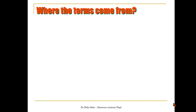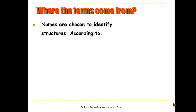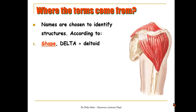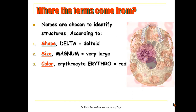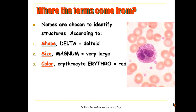Structures inside the body are named either according to their shape, like the deltoid muscle, or according to their size, like the foramen magnum — which is the largest foramen at the base of the skull.